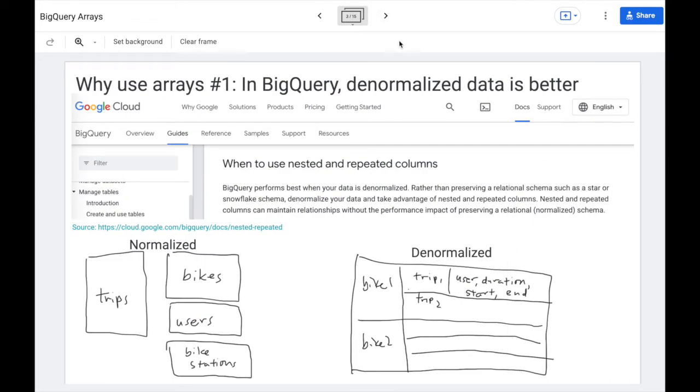So what's the reason for using arrays? The number one reason is that in BigQuery, denormalized data is better. So you might be used to a relational schema where every single entity is in a separate table, trips in one, bikes in another, users in a third table. Well, if your data is big enough, your trips table might span multiple data centers.